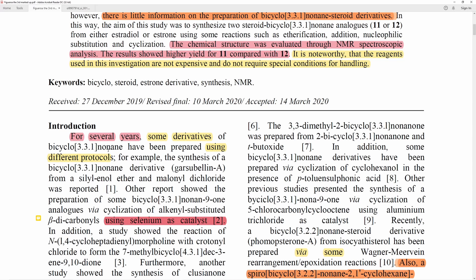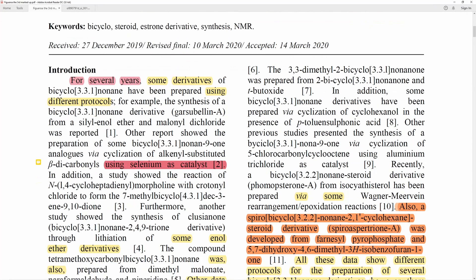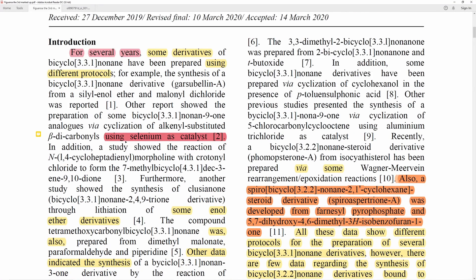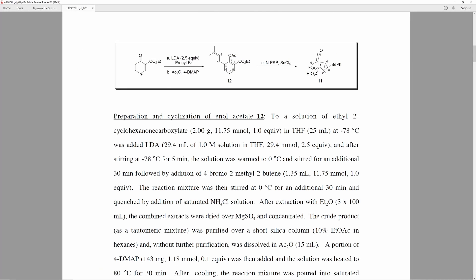For several years, some derivatives of bicyclo-331-nonane have been prepared using different protocols, and one of the protocols he talks about uses selenium as a catalyst, or so he says. However, they do not use selenium. They do use a selenium-based reagent, but they don't use it catalytically, and I'm just going to show this to you.